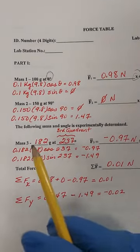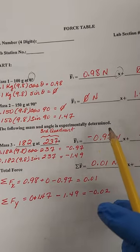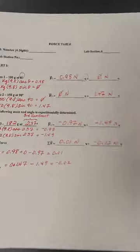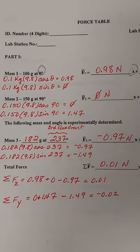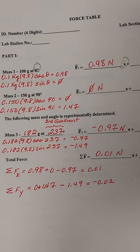Now, since the following mass and angle has to be experimentally determined, for my mass three, when I did my experiment, I got a mass of 182 grams.